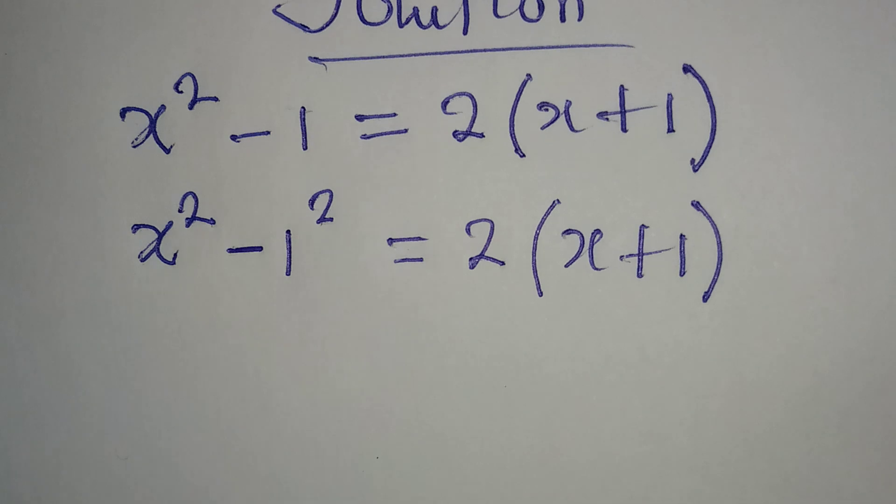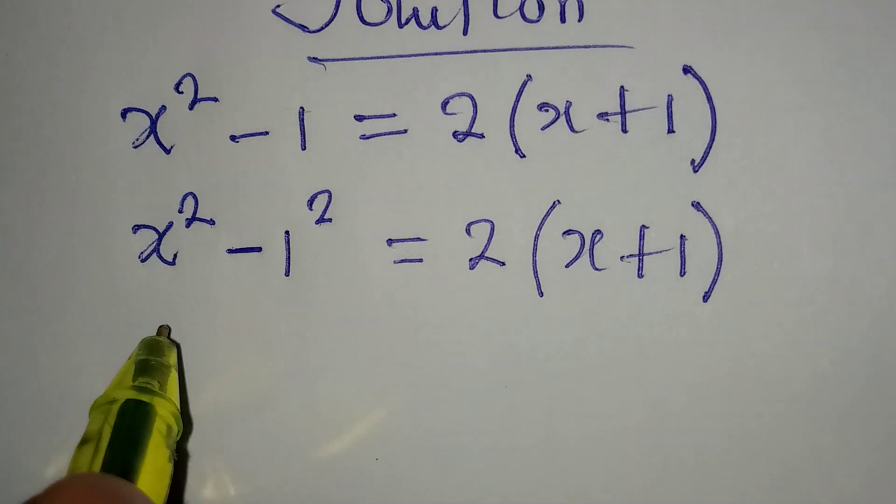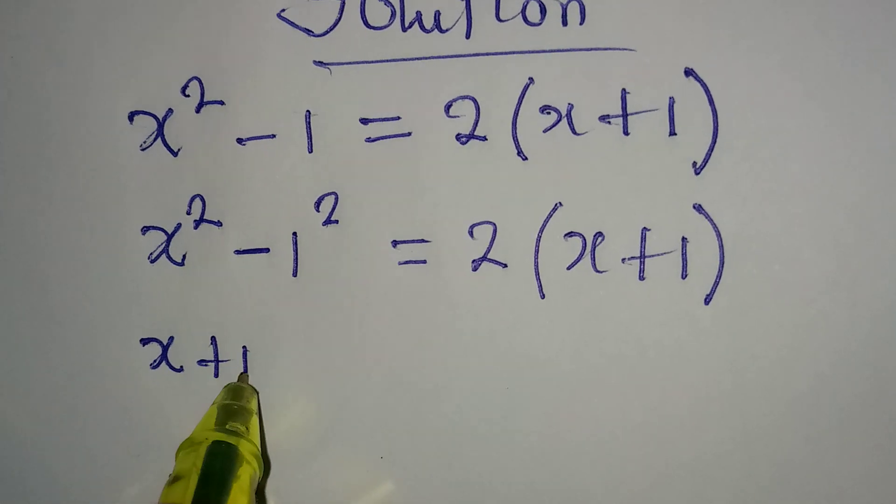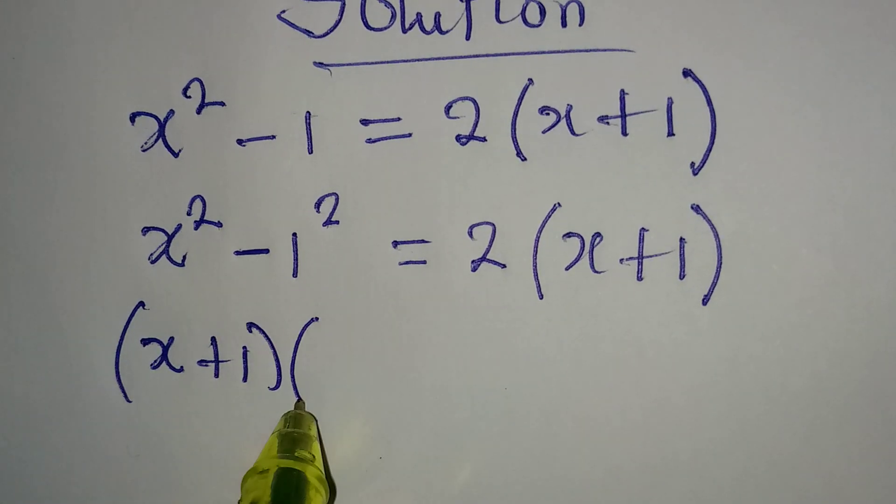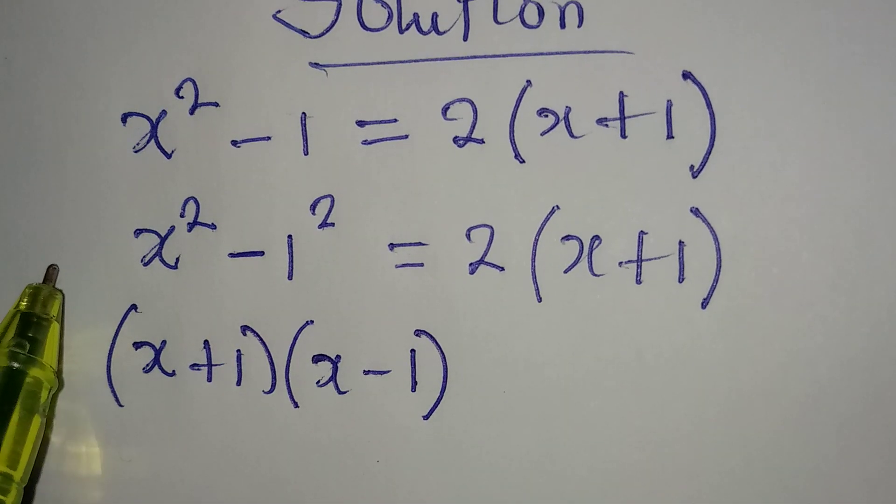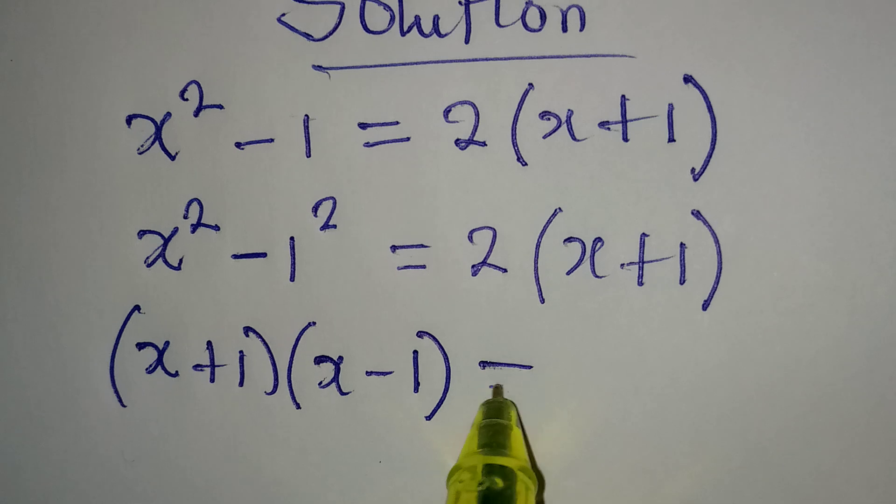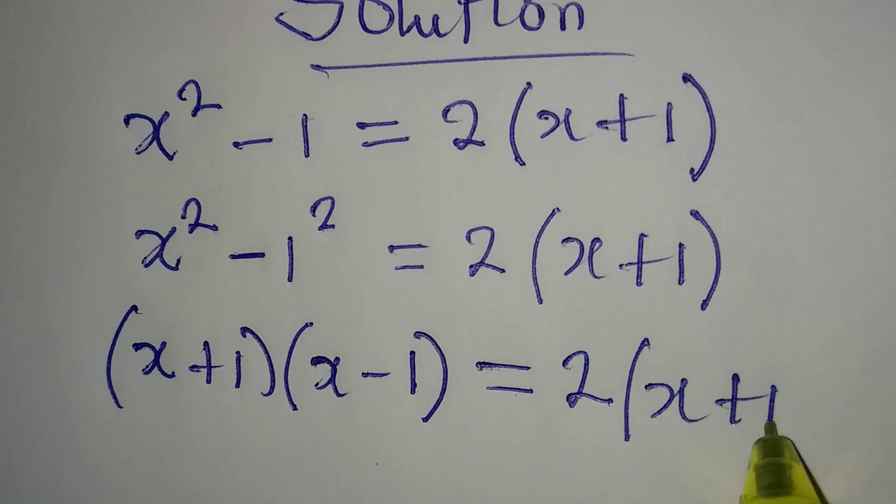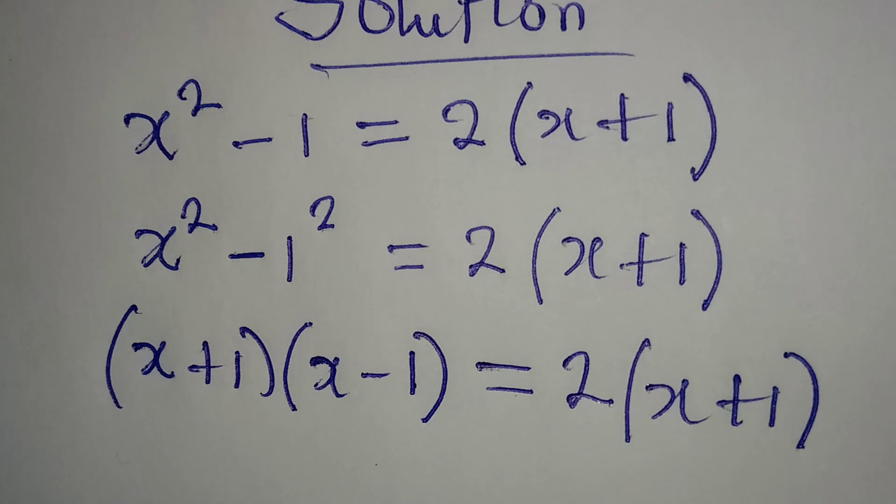Now the next thing I will do is to apply difference of two squares here so that I will be having x plus 1 into x minus 1 - that is for the left hand side. Now on the right we have 2 into x plus 1.